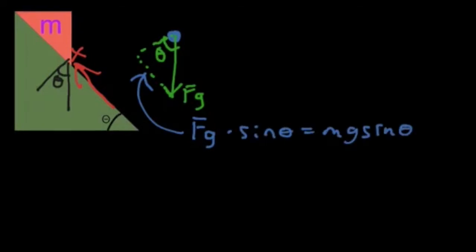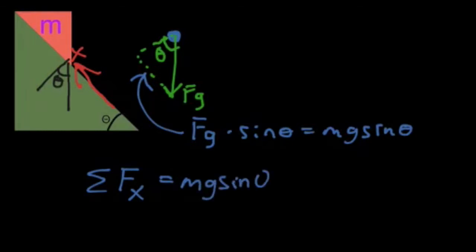And so we know that the sum of forces acting along the x-axis, which is just this one force, Mg sine theta, is going to equal the mass times the acceleration along the x-axis. The masses cancel out. And we know that the acceleration along the x-axis is equal to G times sine of theta.